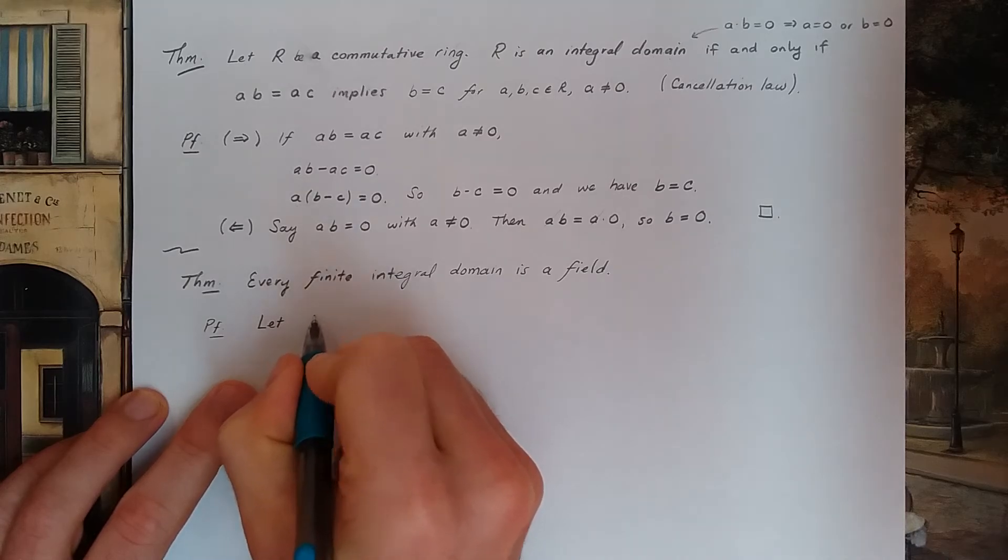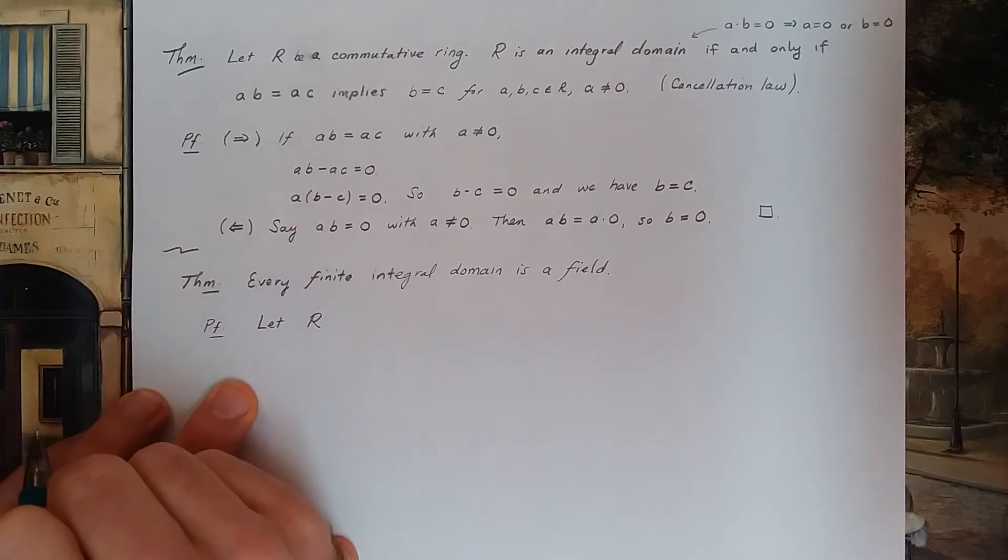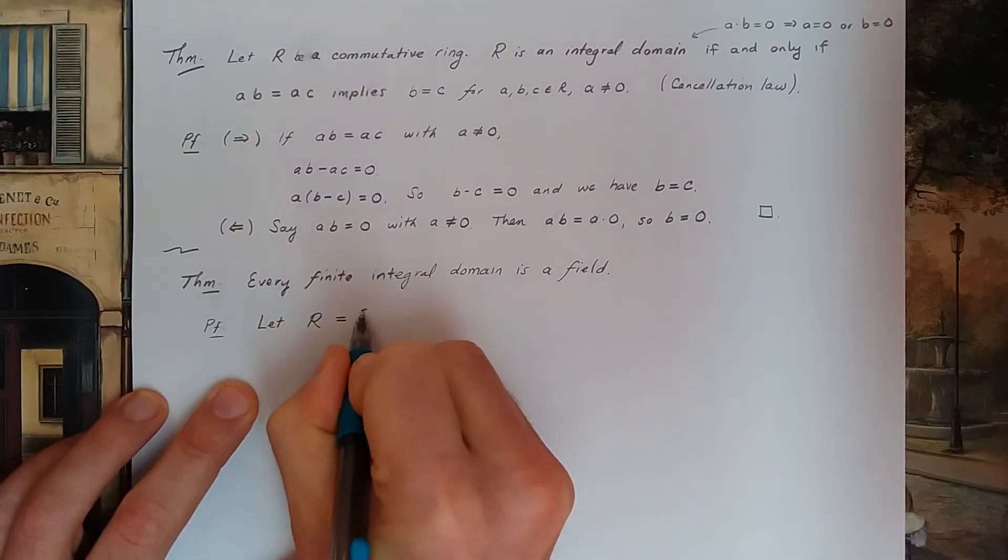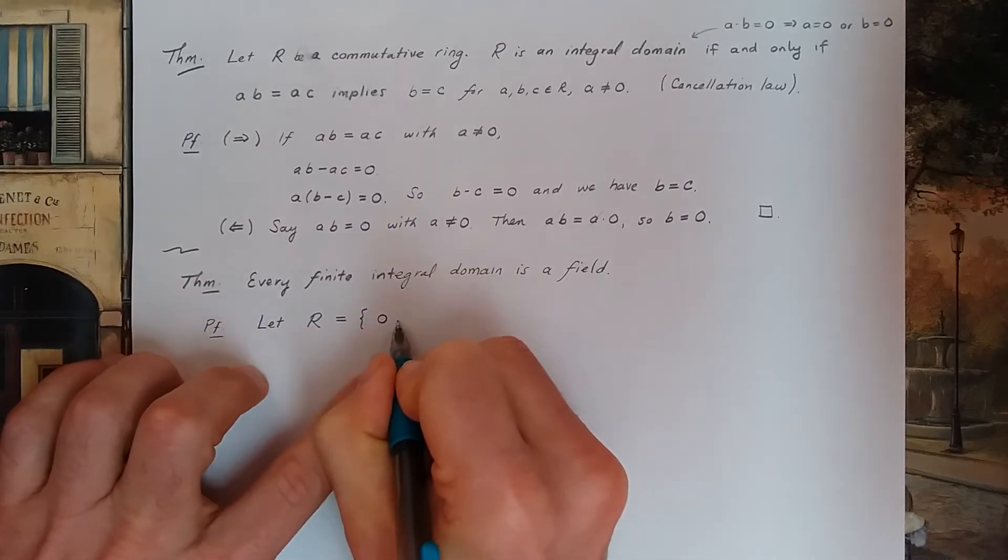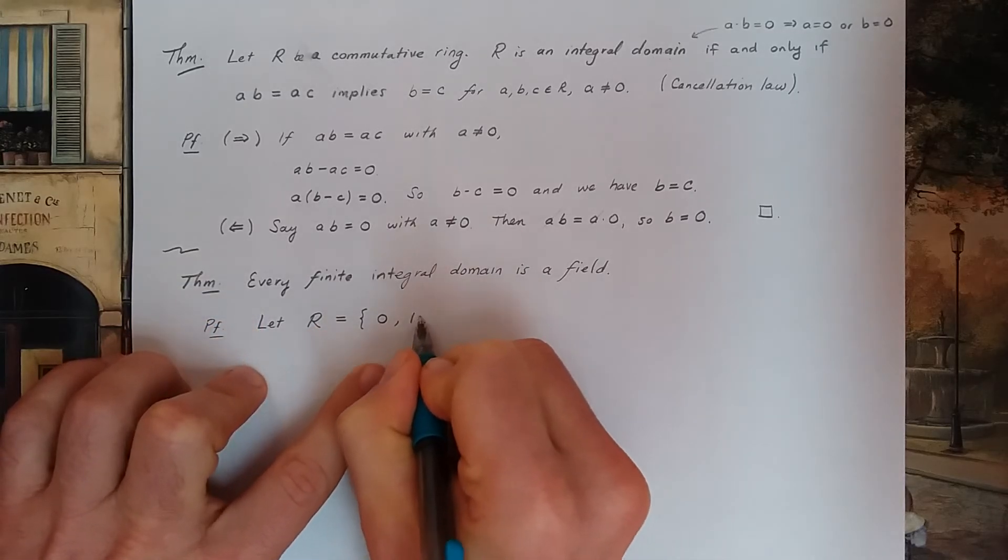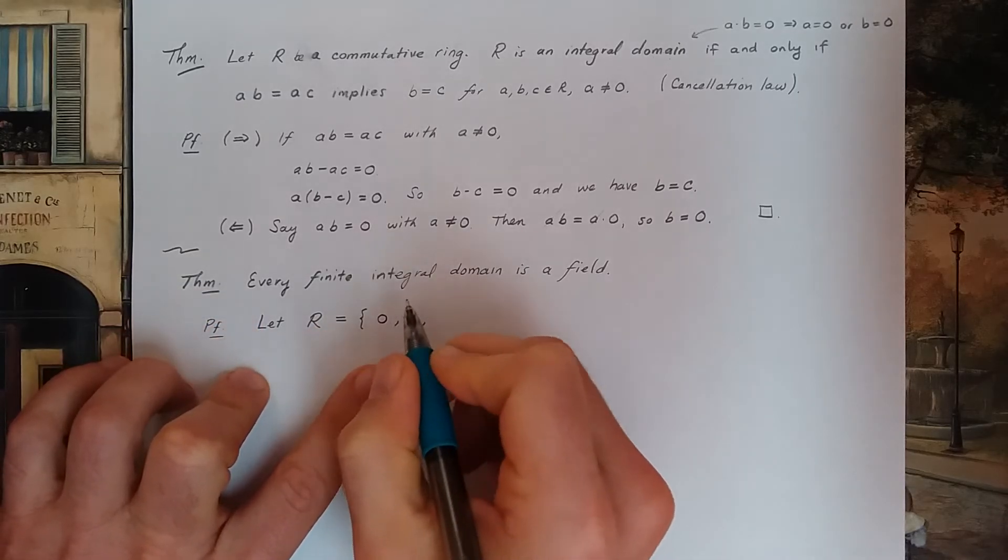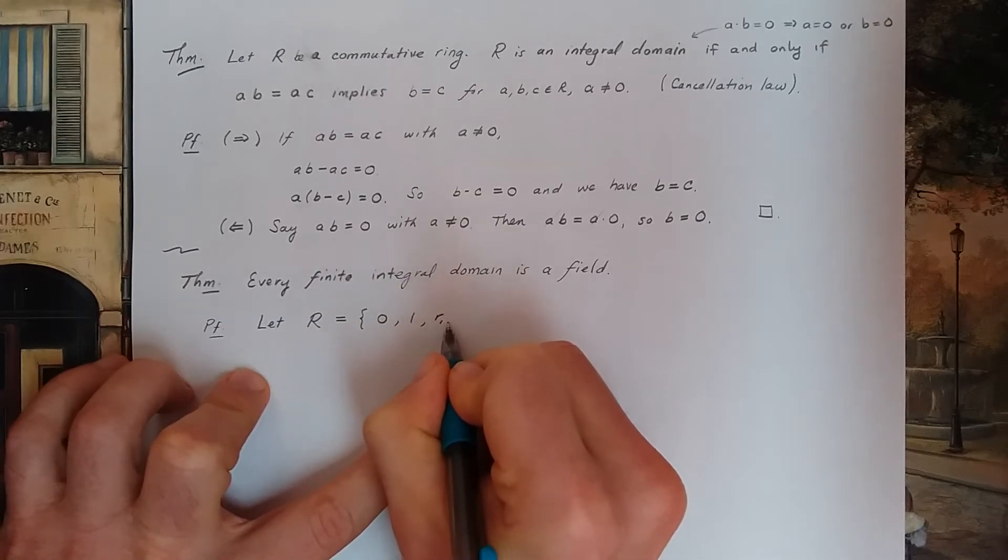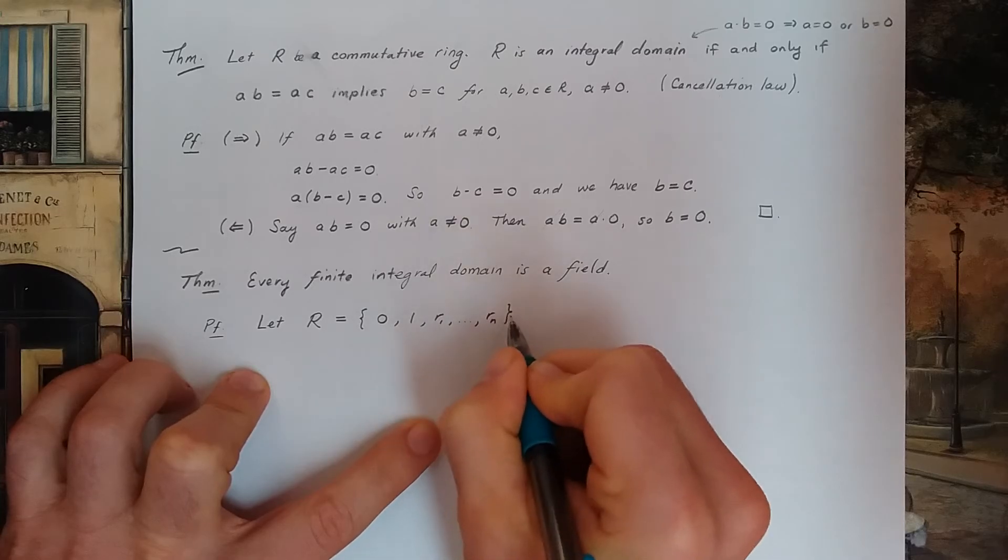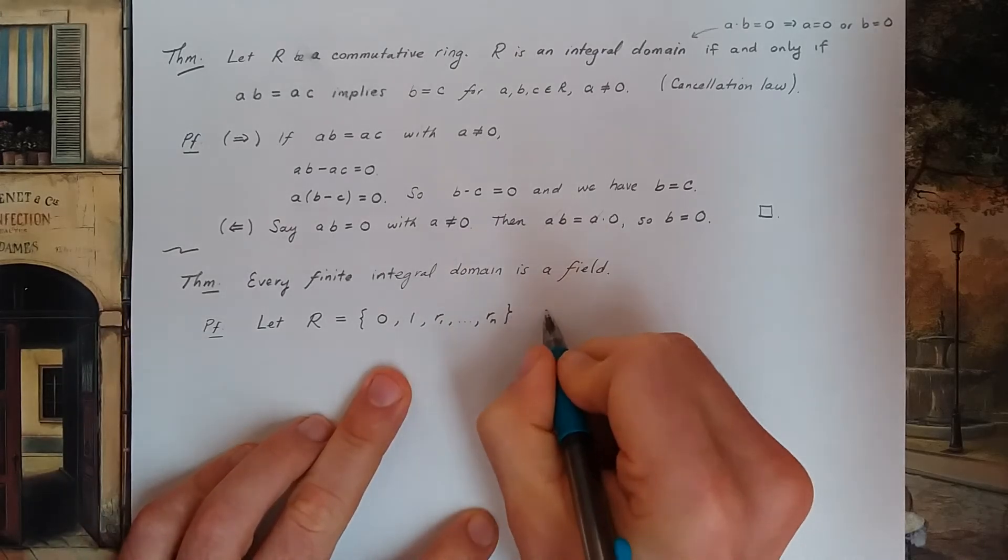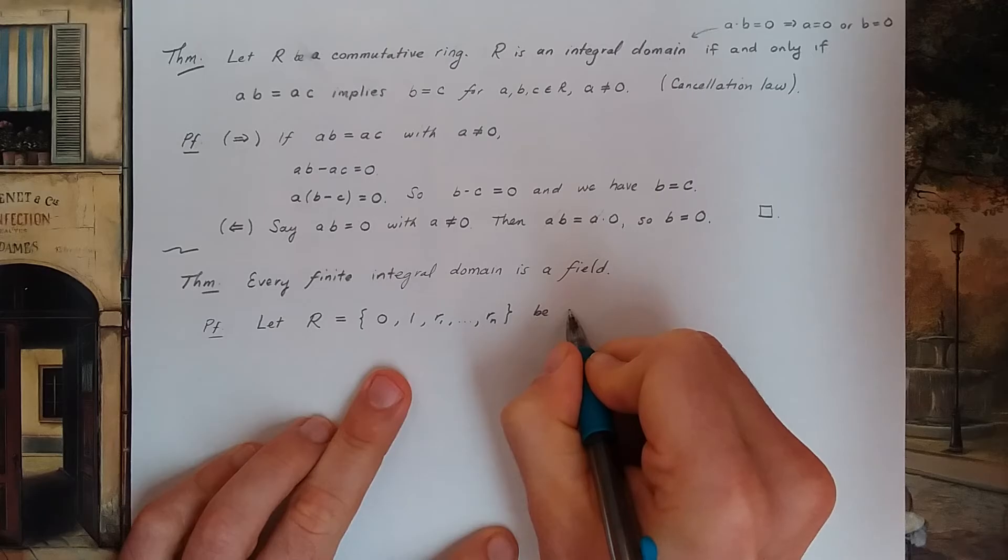So I have a ring R and it's a finite integral domain. So I have a zero in my ring. Every ring has a zero. For us, our rings have unity, so we have a one in the ring. Then I've got a bunch of other elements in my ring. But finite. Let this be my integral domain.